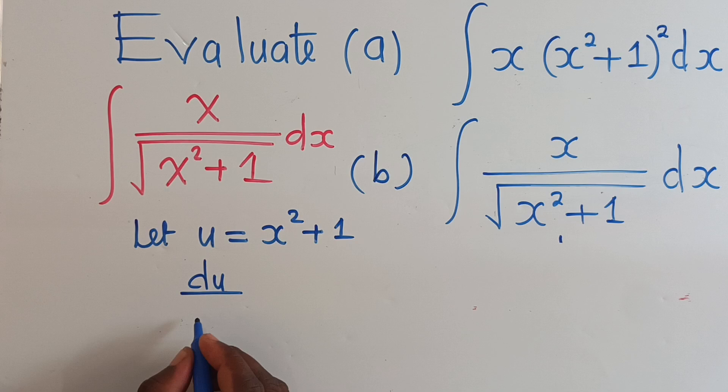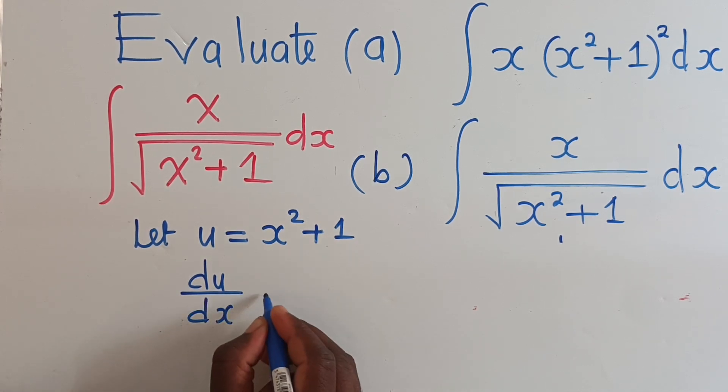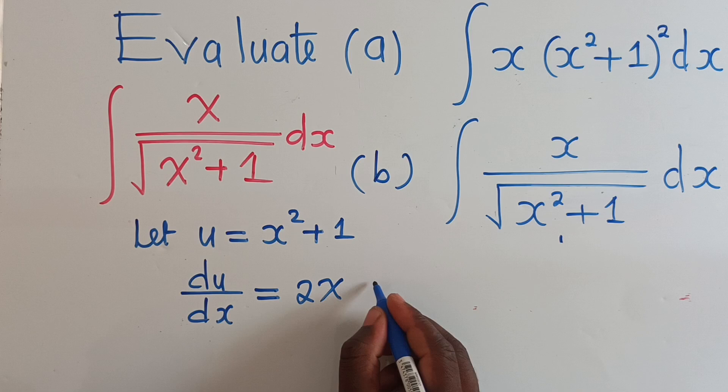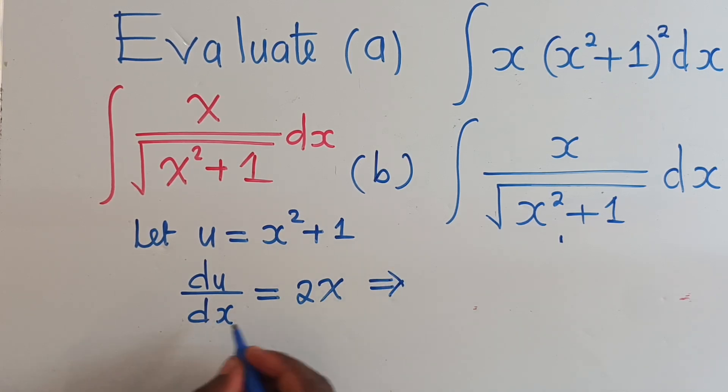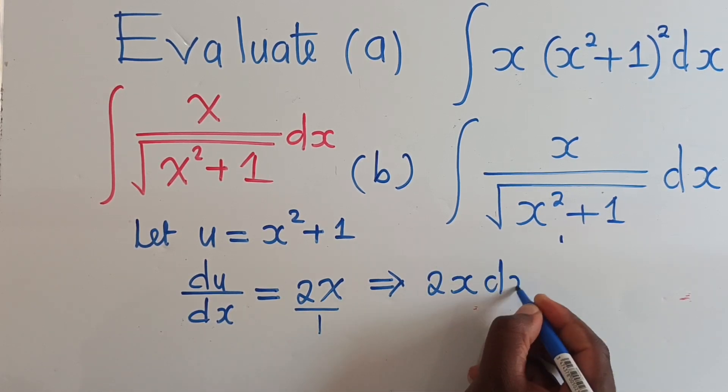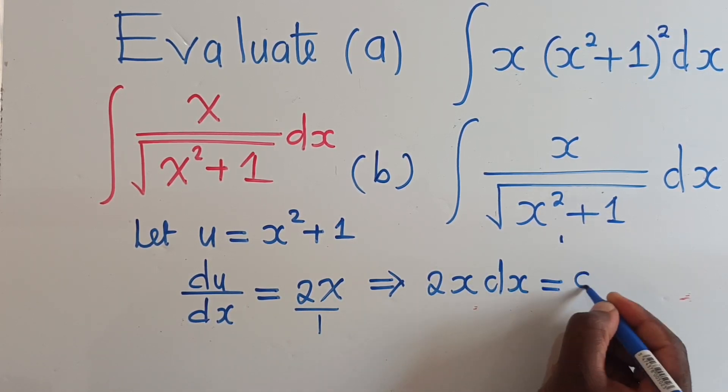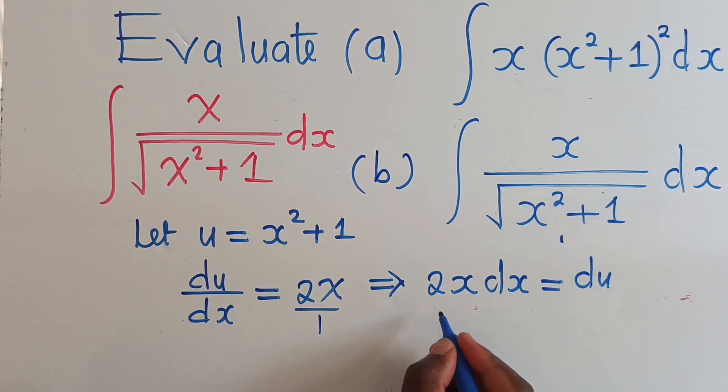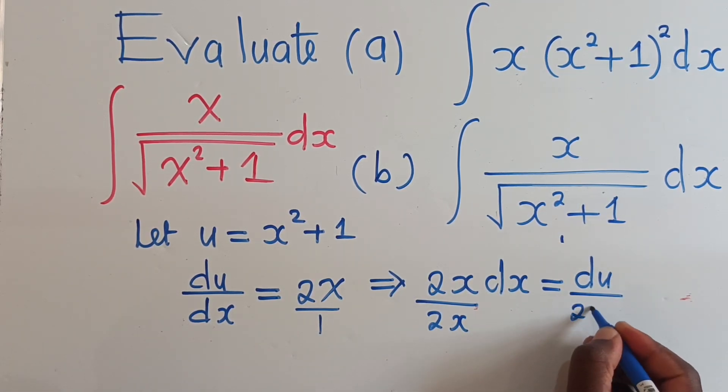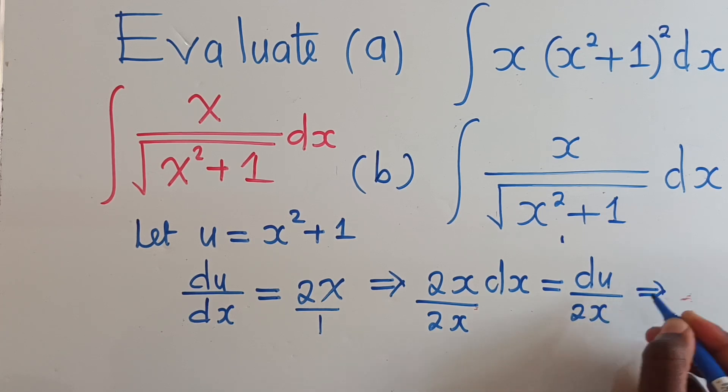So this will simply be 2x. We make dx subject of the formula, so we shall cross multiply. So we have 2x dx is equal to du, divide by 2x by 2x, so that we remain with dx which is equal to du over 2x.